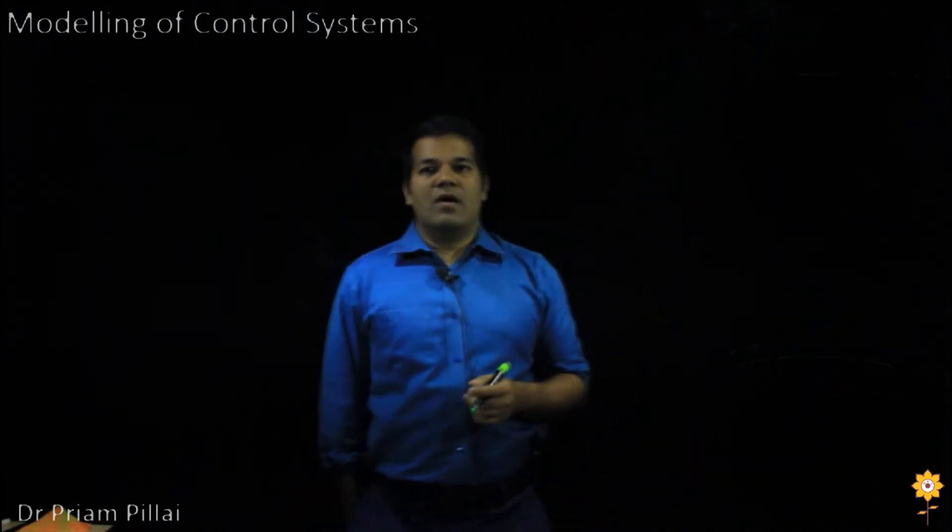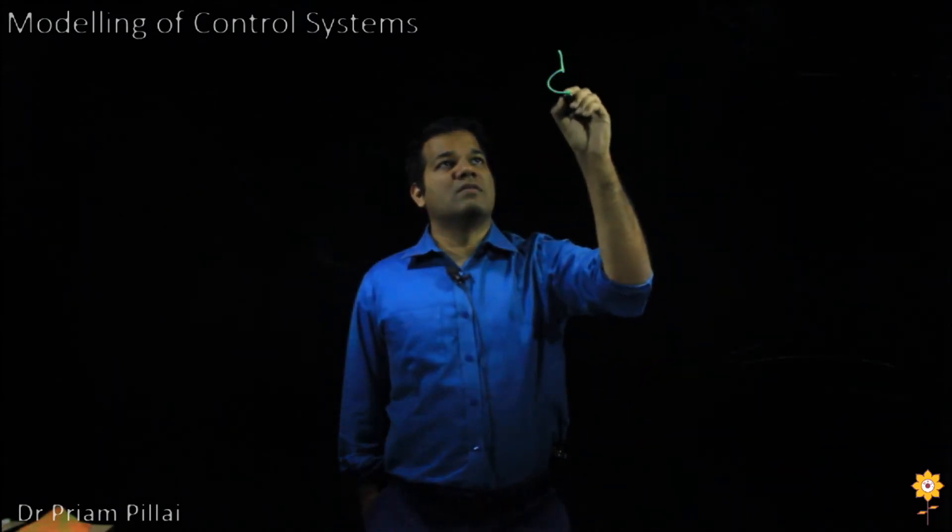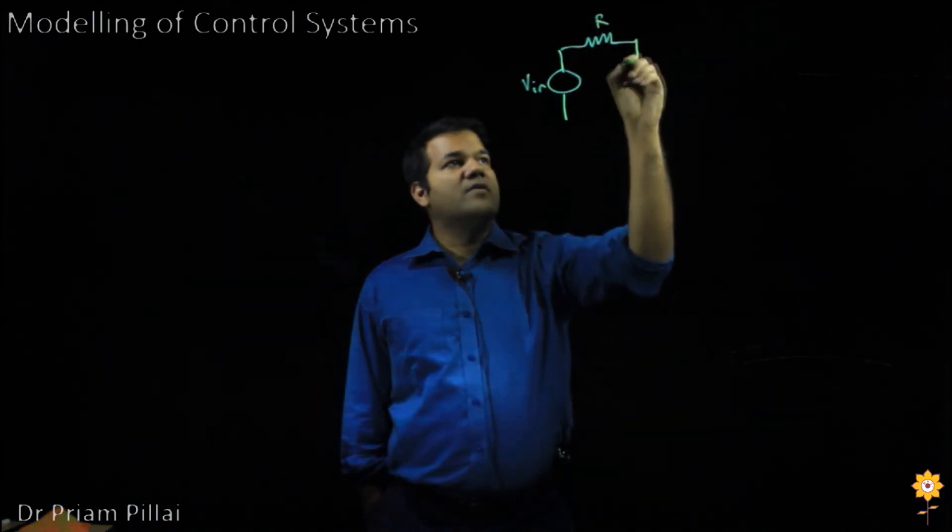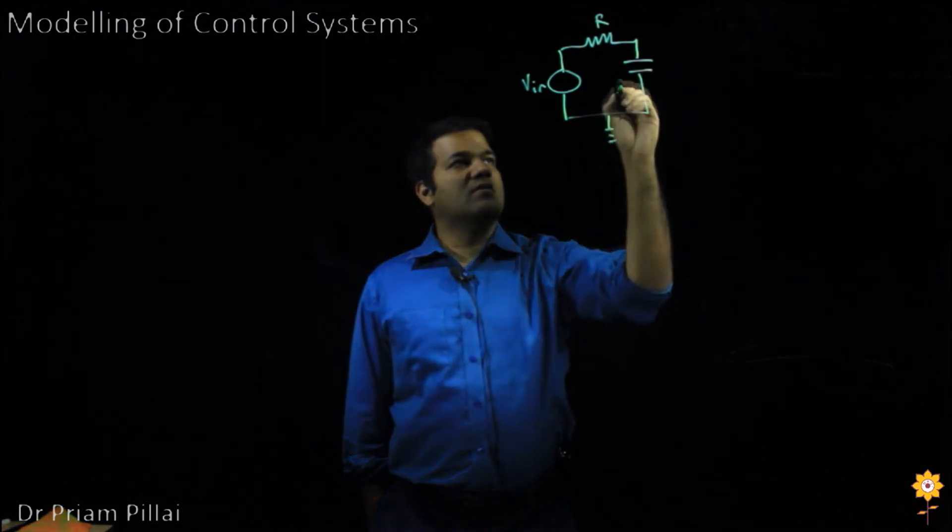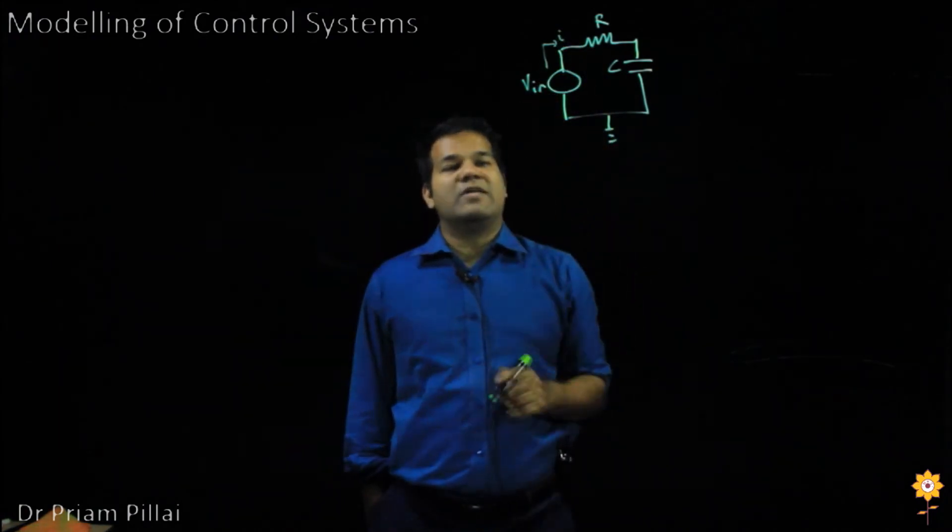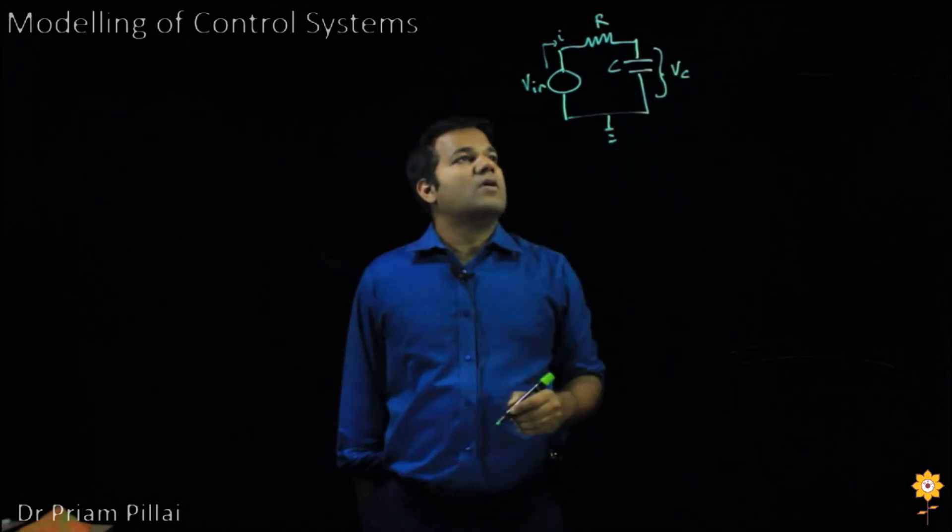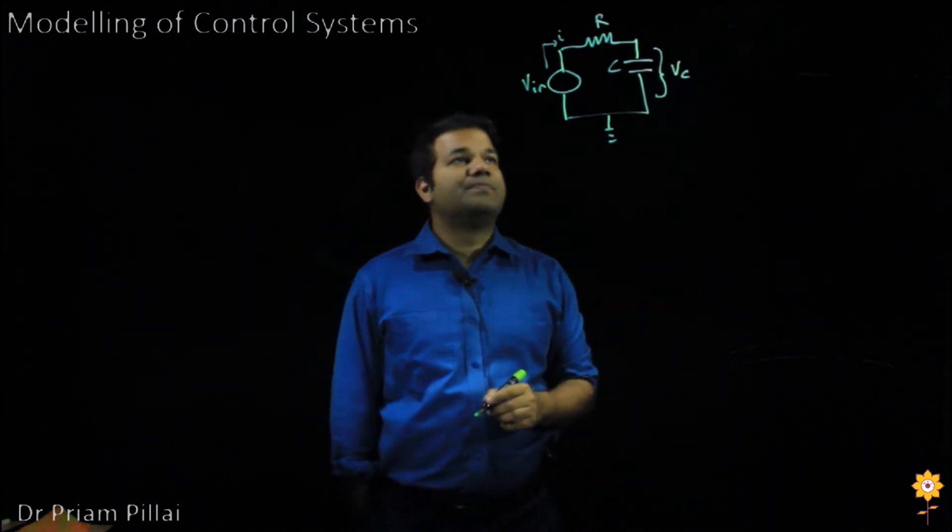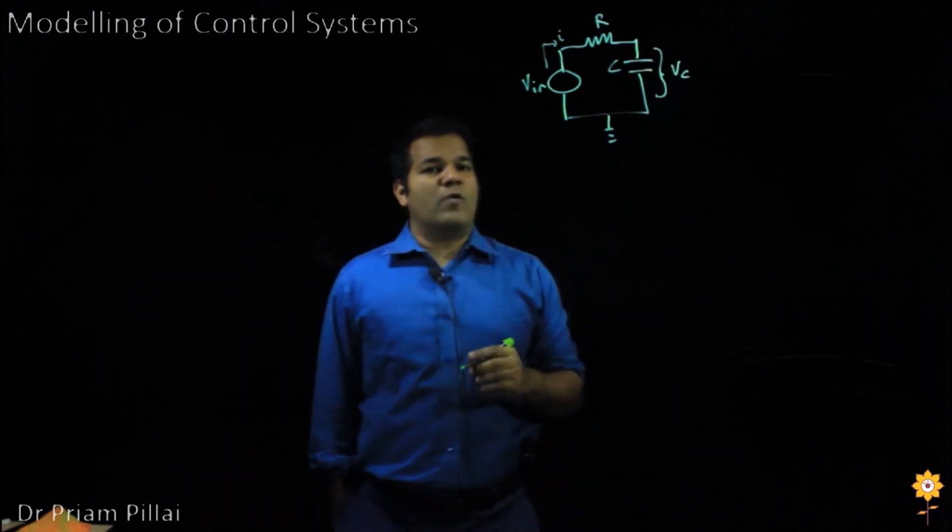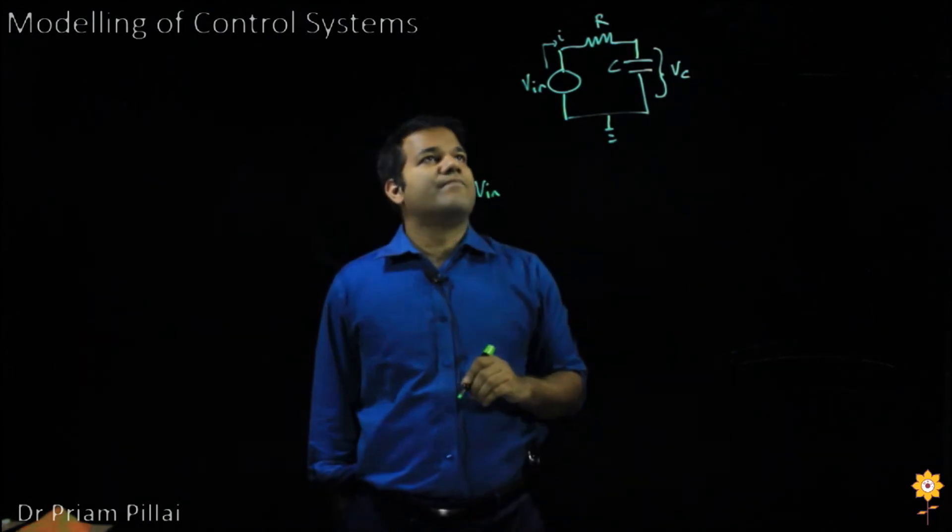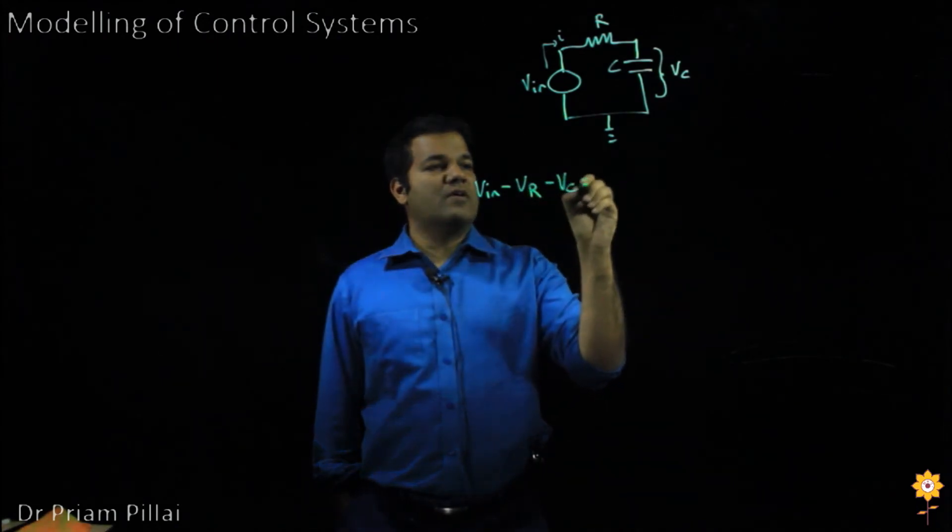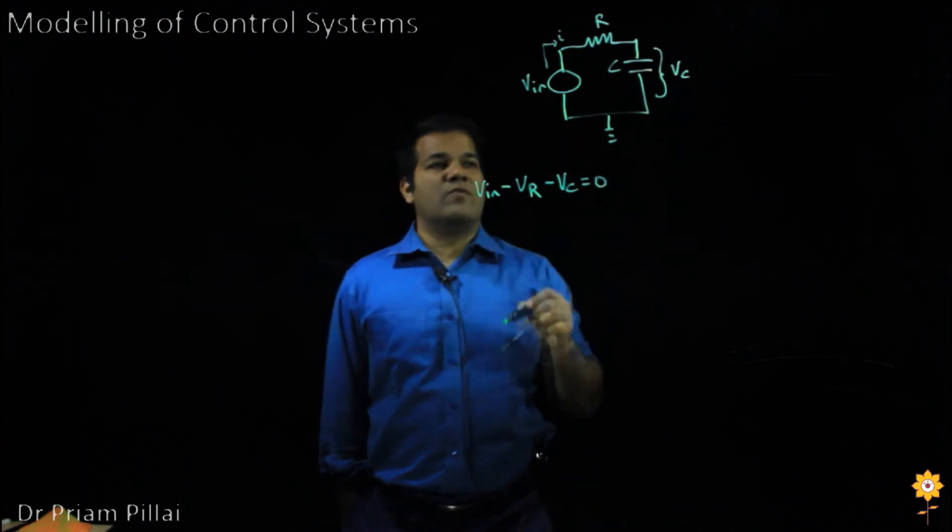Let's also consider an electrical system, and in this case a simple RC circuit with an input voltage V in, a resistor R connected in series with a capacitor. There is a current I flowing through it. Our input is the voltage in and the output is the voltage across the capacitor. We can apply Kirchhoff's voltage law to this circuit. And what we end up getting is that V in minus V R minus V C equals zero. The sum of all the voltages along the circuit will be zero.